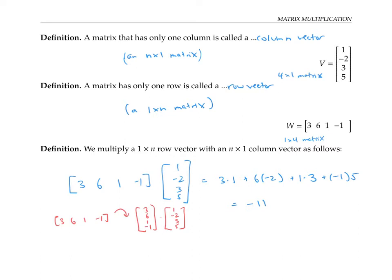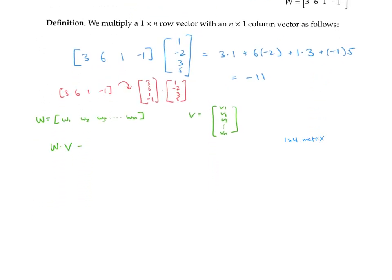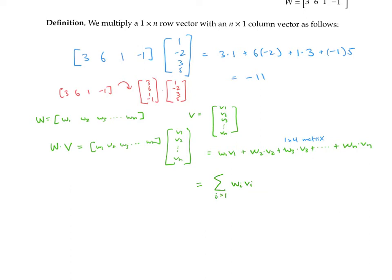Let's write this multiplication process as an abstract formula. Write the row vector W with entries w₁, w₂, w₃, all the way through wₙ, and the column vector v with entries v₁, v₂, v₃, all the way through vₙ. To perform the multiplication w times v, we compute w₁ times v₁, plus w₂ times v₂, plus w₃ times v₃, and so on up to wₙ times vₙ, and add all those terms. Using summation notation with the sigma symbol, this is written as the sum of wᵢ times vᵢ, where i goes from one to n.